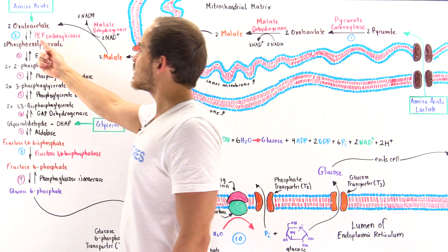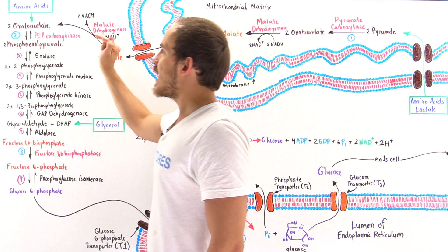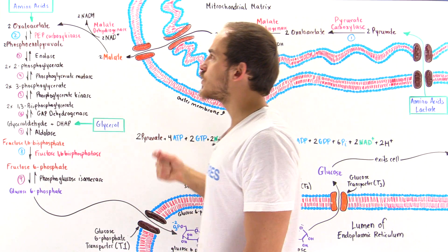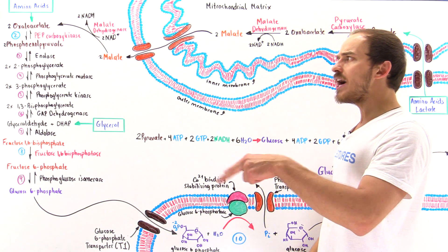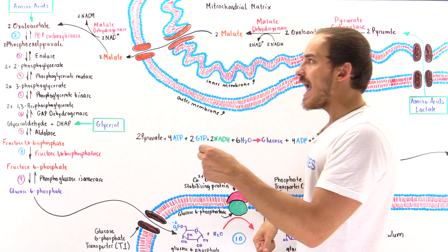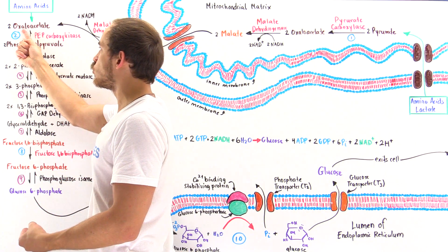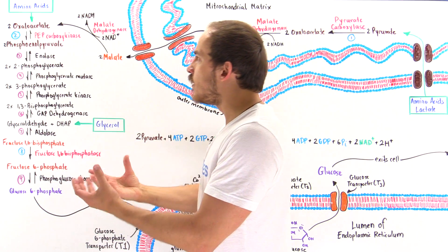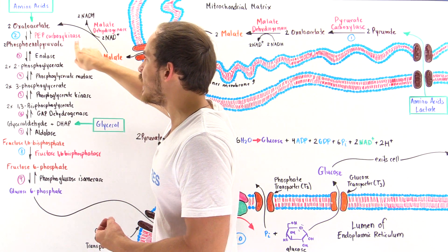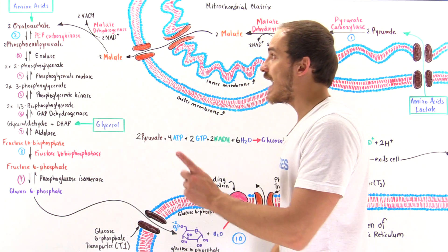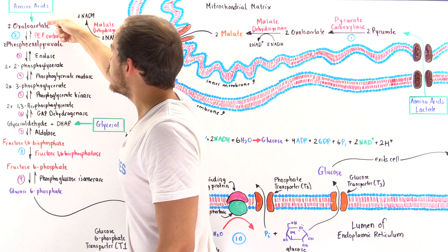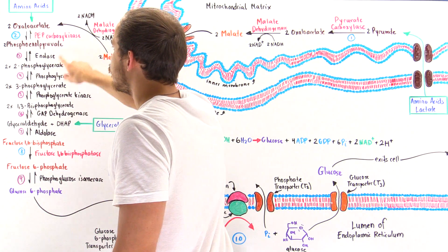In step number two, the enzyme phosphoenolpyruvate carboxykinase phosphorylates the oxaloacetate while simultaneously decarboxylating it to form phosphoenolpyruvate. We need these two reactions coupled because phosphorylation requires energy, while decarboxylation — removing a carbon dioxide group — releases energy. We use the decarboxylation reaction to drive the phosphorylation. We produce two phosphoenolpyruvates from two oxaloacetates. In this step, we use GTP molecules — a single GTP is used per one oxaloacetate to produce the phosphoenolpyruvate.